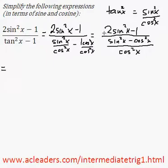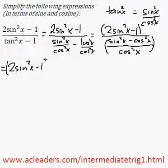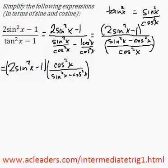Okay, so now what I can do is I can multiply the numerator by the reciprocal of the denominator, because every time that we divide by a fraction, we can multiply by the reciprocal. So we have 2 sine squared x minus 1 times cos squared x.